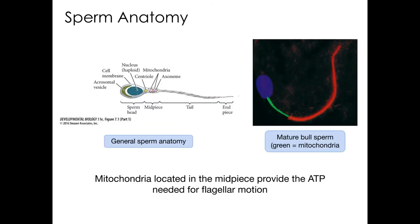The function of the sperm is also aided by the localization of mitochondria in the cell. Mitochondria are able to move along microtubules within cells using motor proteins, and that allows them to become localized to specific regions of the cell where energy is needed. Moving the mitochondria to the base of the flagellum in sperm serves to provide the energy needed to power the movements of the flagellum.